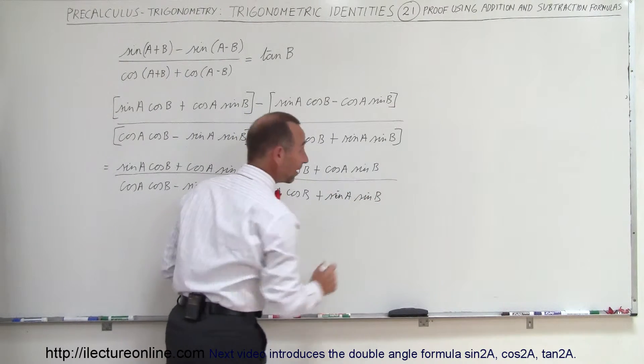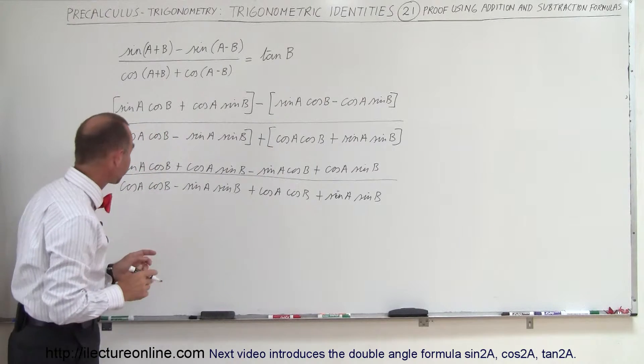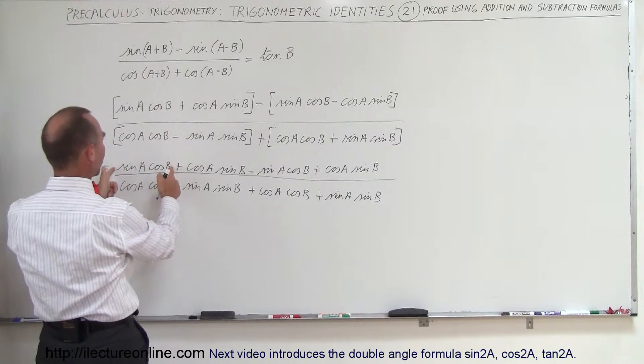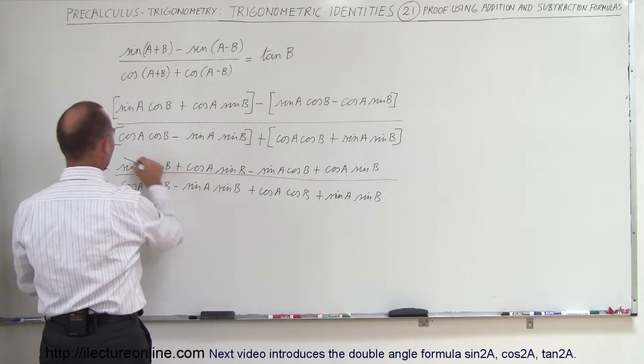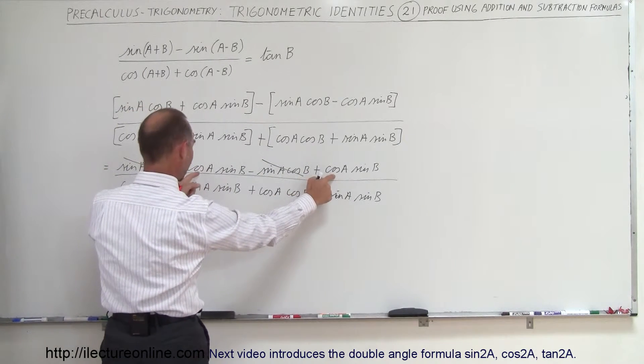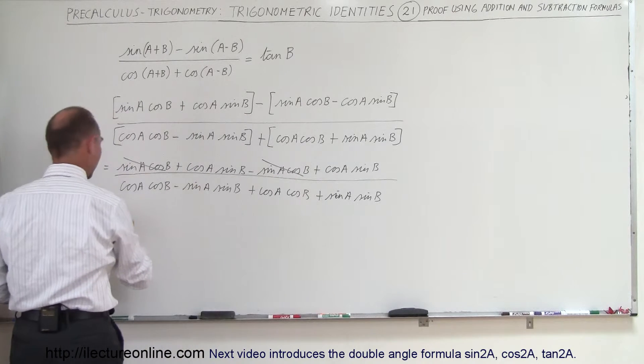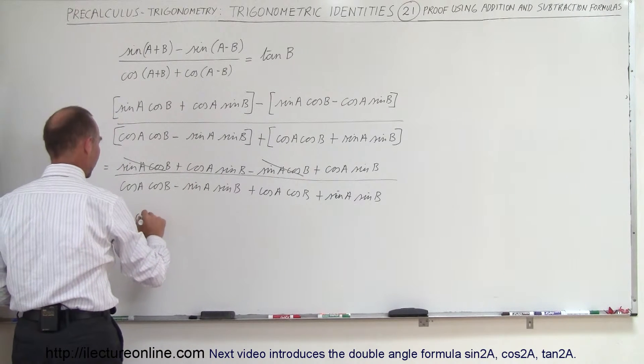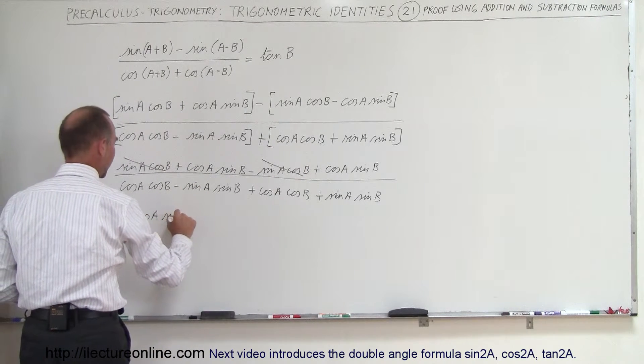All right, now let's find out what simplifies. See, we have a sine a, cosine b, and a minus sine a, cosine b, so this cancels out with that. And this and this is additive, so this becomes two times the cosine of a times the sine of b.